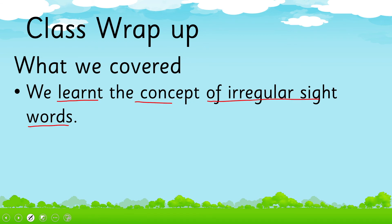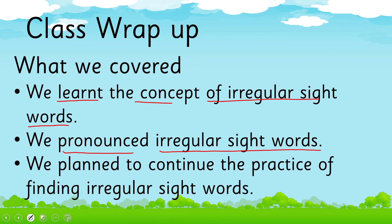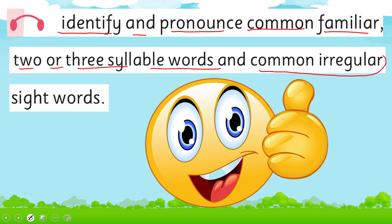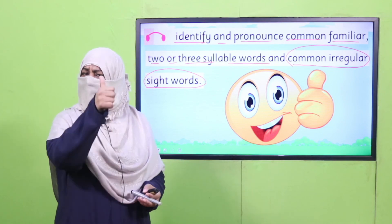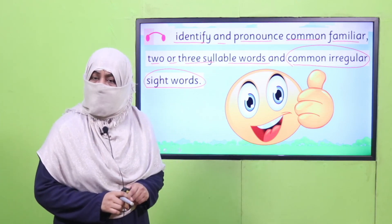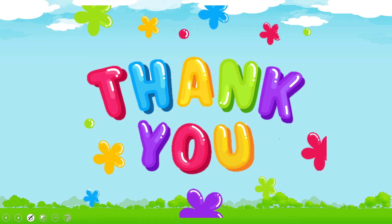So, in this way, what we have learned today: we learned the concept of irregular sight words, we pronounced irregular sight words, and we planned to continue the practice of finding irregular sight words. Alhamdulillah, we achieved today's SLO — to identify and pronounce common familiar two or three syllable words and common irregular sight words. That's it for today. Tomorrow I'll come again with a very interesting lesson. Till then, keep practicing, take very good care of yourself. Thank you, Allah Hafiz.